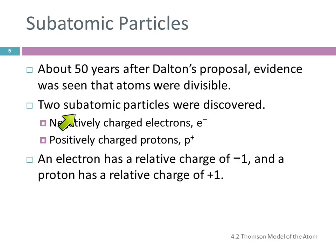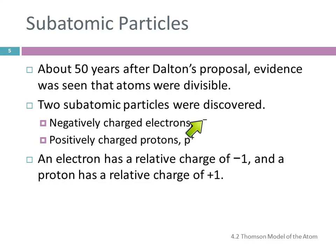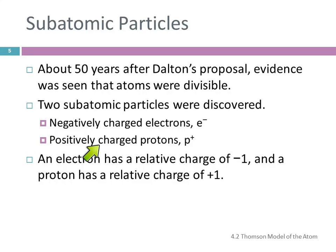Subatomic particles are smaller than atoms. The two that were discovered first were electrons, which have a negative charge and the symbol E with a negative sign, and protons, which have a positive charge, listed as P with a plus sign. Sometimes that positive sign is left off, but other times it's on.